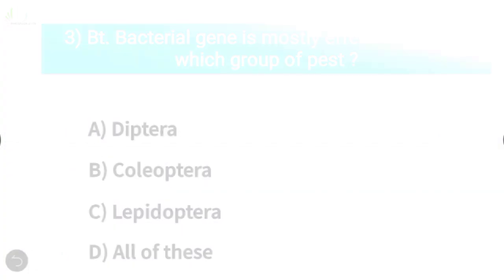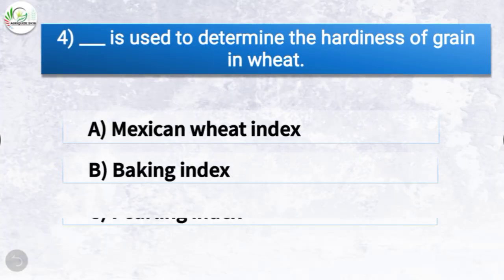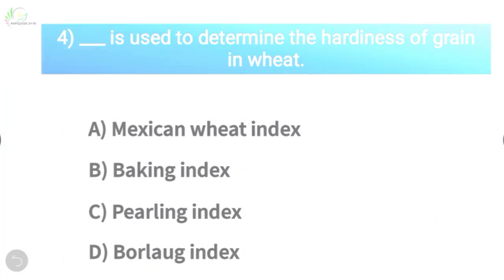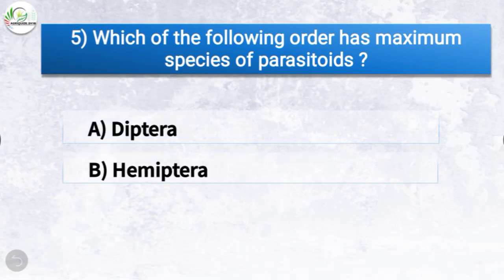Question number four: dash is used to determine the hardiness of grain in wheat. The options are Mexican wheat index, baking index, Purl index, or Borlaug index. The correct answer is option C, Purl index. So Purl index is used to determine the hardiness of grain in wheat.